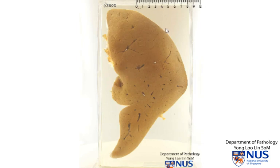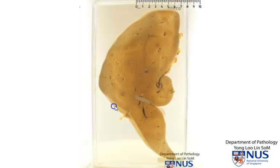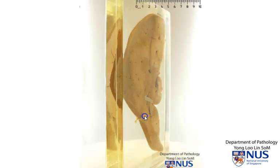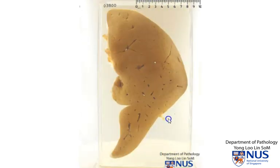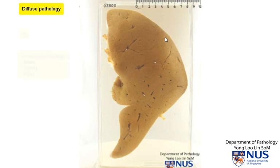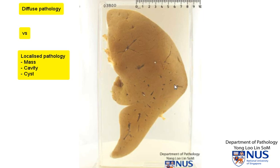Here we're looking at a slice of liver, and I'm going to turn this around so that you can look at the opposite surface. Inspecting this grossly, we can see that the pathology is diffusely involving the entire liver. One of the first points of decision is to decide whether the pathology is a diffuse one, as it is in this case, or a localized one — meaning in the form of a mass, nodule, cavity, or cyst. In this instance, we don't see any discrete or localized lesions, and therefore this is a diffuse pathological process.